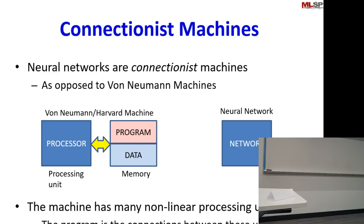On the other hand, a connectionist machine is very different. In a connectionist machine, the program is the architecture — the connections specify the program. If you want to change the program, you have to change the machine — you have to rewire your entire machine. Which is why you don't actually build hardware for your neural network every time; you emulate the connectionist machine on a Von Neumann machine, simply because as a machine by itself, a connectionist machine is a fundamentally different principle.